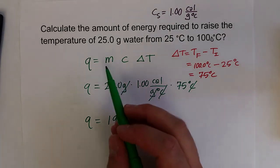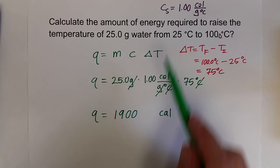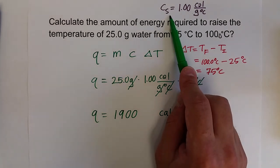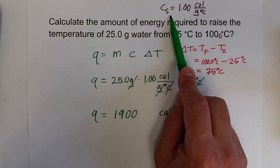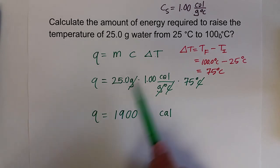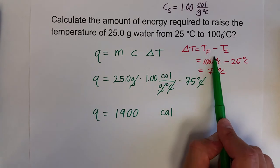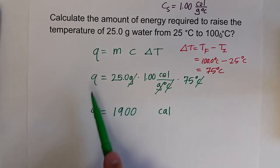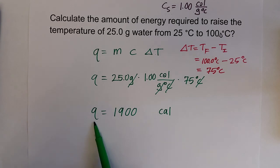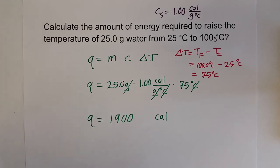Now we know how to use the heat equation Q = mcΔT to calculate heat transfer, where specific heat is specific to each individual substance, and delta T is always final minus initial. If the sample were losing heat, delta T would be negative, telling you how much heat the system is losing.